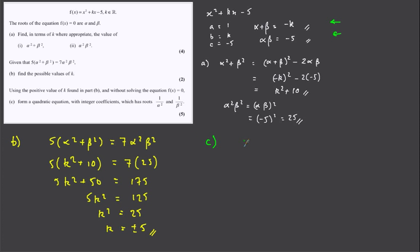So, if we have roots 1 over alpha squared, 1 over beta squared, so we have the sum of these new roots,